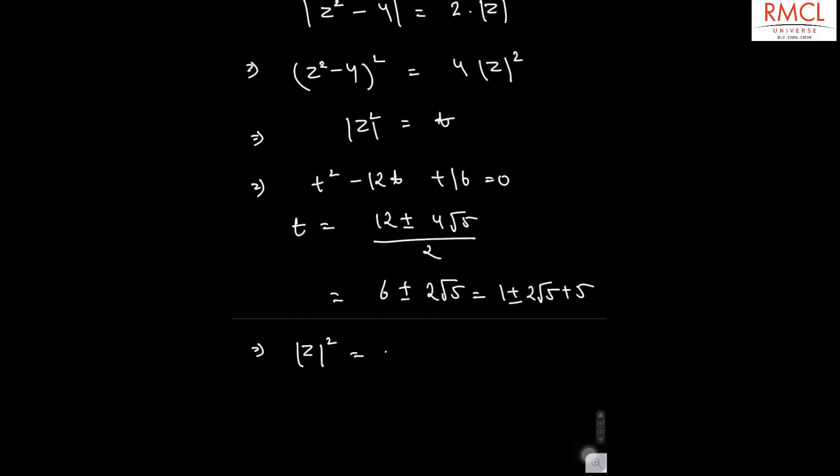Which is the whole square of 1 plus root 5 and 1 minus root 5.